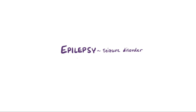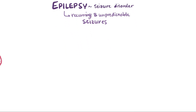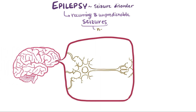Epilepsy means seizure disorder, so people with epilepsy have recurring and unpredictable seizures. A seizure is a period where cells in the brain, or neurons, are synchronously active — or active at the same time — when they're not supposed to be.